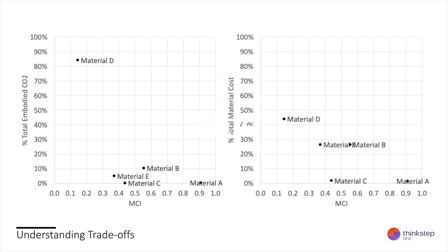The MCI generally isn't used in isolation, but alongside other established metrics found in life cycle assessments and corporate risk assessments. For example, in the ThinkStep tool, you can compare the MCI of different product components with their embodied carbon or cost. Understanding the intersection of these different metrics can help you to identify hotspots and to prioritise where you might look to apply circular economy principles first. Increasingly, we find MCI reported alongside environmental product declarations and as a means of identifying possible mitigation strategies for critical materials and other supply chain risks.